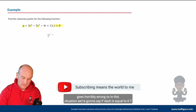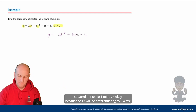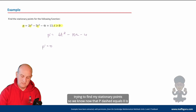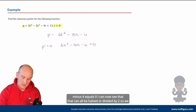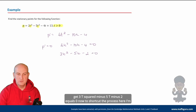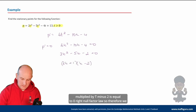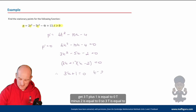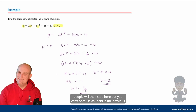So p dash = 6t² - 10t - 4. The constant 13 differentiates to zero. We're looking for stationary points so p dash = 0: 6t² - 10t - 4 = 0. Divide by 2: 3t² - 5t - 2 = 0. This factorizes as (3t + 1)(t - 2) = 0. By the null factor law: 3t + 1 = 0 giving t = -⅓, or t - 2 = 0 giving t = 2. Lots of people stop here — but you can't.